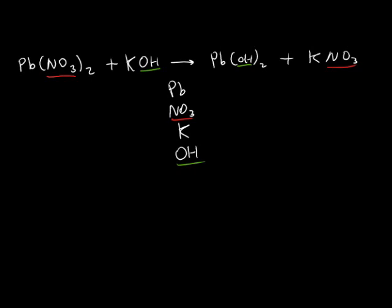Now let's count the number of pieces on the left side. We see one lead, two nitrate pieces, one potassium, one hydroxide. On the right side, we have one lead, two hydroxide, one potassium, one nitrate piece. Therefore, the reactants that are out of balance are nitrate and hydroxide. Let's try to balance the nitrate first. We've underlined where nitrate exists on the right — there's one on the right but two on the left. In order to balance the nitrate, we will place a 2 in front of the KNO3, because that is the product that contains NO3. This will double the NO3 on the right and double the potassium on the right.